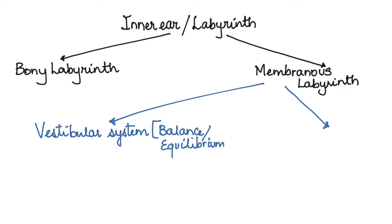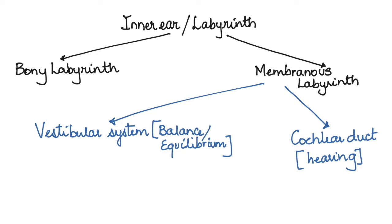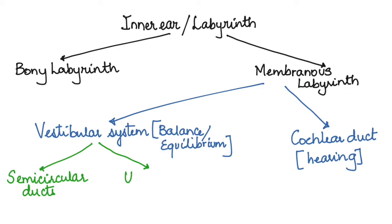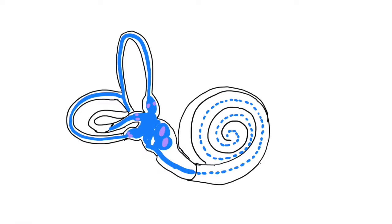The membranous labyrinth has a vestibular system that deals with the balance and equilibrium of the body, and the cochlear duct which is responsible for hearing. The vestibular system has two main regions: the semicircular ducts located inside the semicircular canals, and the utricle and saccule.